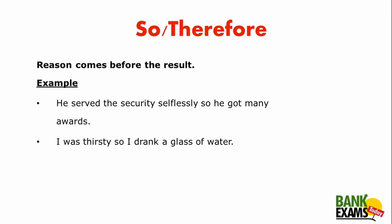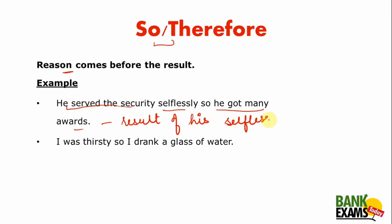The next are 'so' and 'therefore'. These two words are used when the reason comes first and the result comes after. For example: 'He served the security selflessly, so he got many awards.' Here, 'he got many awards' is the result of his bravery. Similarly, 'I was thirsty so I drank a glass of water' — 'I was thirsty' is the reason and drinking water is the outcome. This is the basic difference between 'therefore/so' and 'because'.